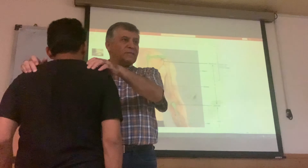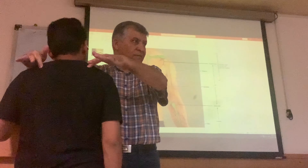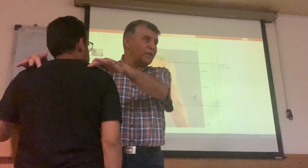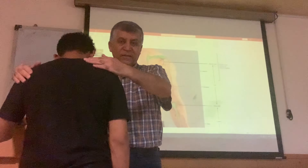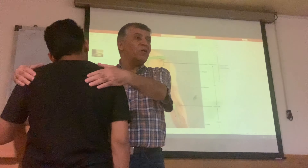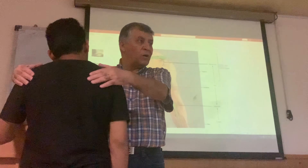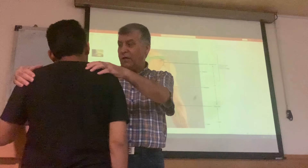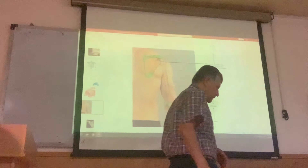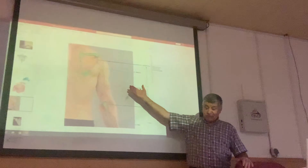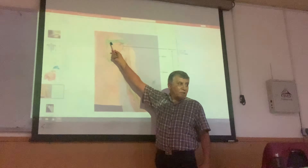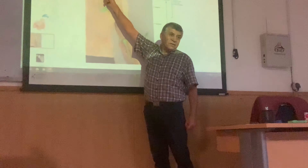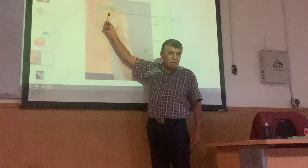This bone is called the spine of the scapula. The area above the spine is called the supraspinous. The area below is the infraspinous. This view is the posterior view of the scapula. The posterior view of the scapula contains the spine of the scapula. We can touch the spine of the scapula. This area is the supraspinous, and this area is the infraspinous.